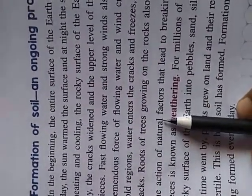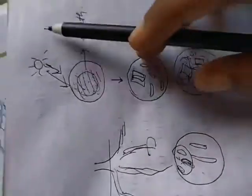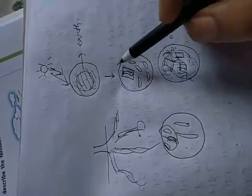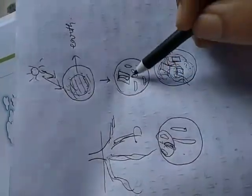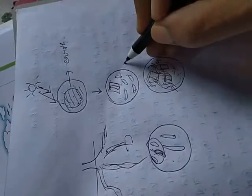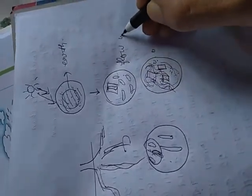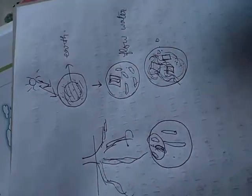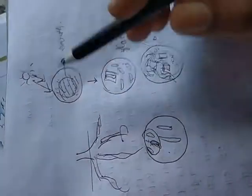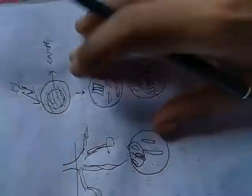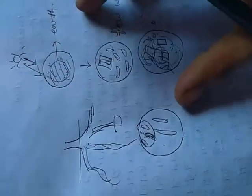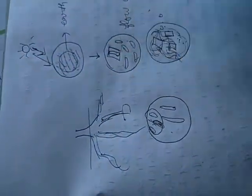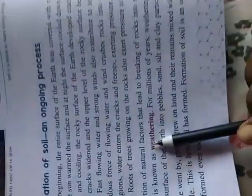What are the natural factors? Natural factors means sunlight, sometimes rainfall, sometimes the wind, the flow of water. These all are the natural factors and they help to form the soil. The ultimate process is known as weathering.